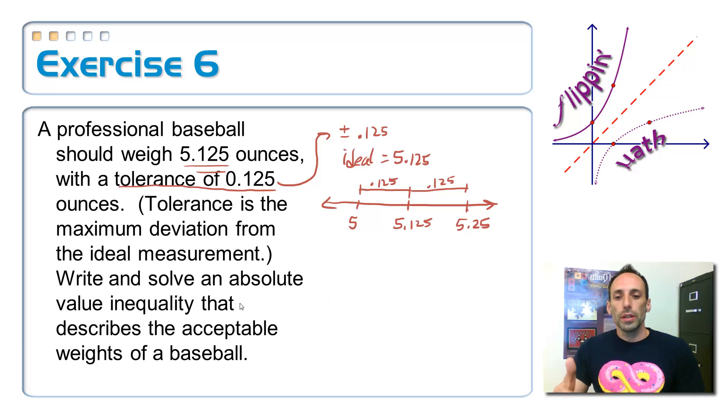So basically, my ideal baseball can go, or any baseball really, can go anywhere from 5 ounces all the way up to 5 and a quarter ounces, and it'll be okay. So, I want to write this as an absolute value inequality. Absolute value inequality is I still need a distance, a distance away from some number. Well, we know that this is the distance right there. That's the tolerance, and the tolerance gives me the distance from either side of what number? That's the ideal weight. That's the 5.125.